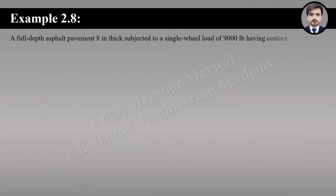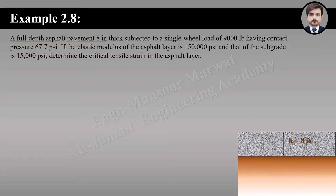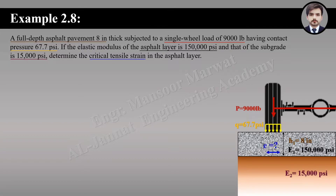Let's solve example 2.8. A full depth asphalt pavement 8 inches thick is subjected to a single wheel load of 9,000 pounds having a contact pressure of 67.7 psi. The elastic modulus of the asphalt layer is 150,000 psi and that of the subgrade is 15,000 psi. Determine the critical tensile strain in the asphalt layer.